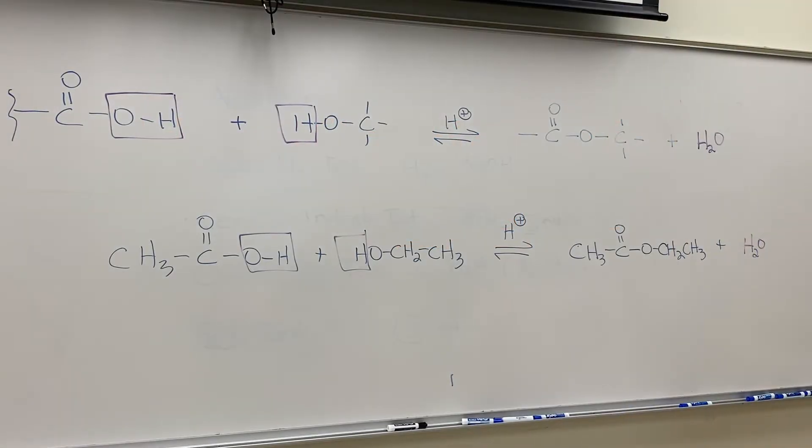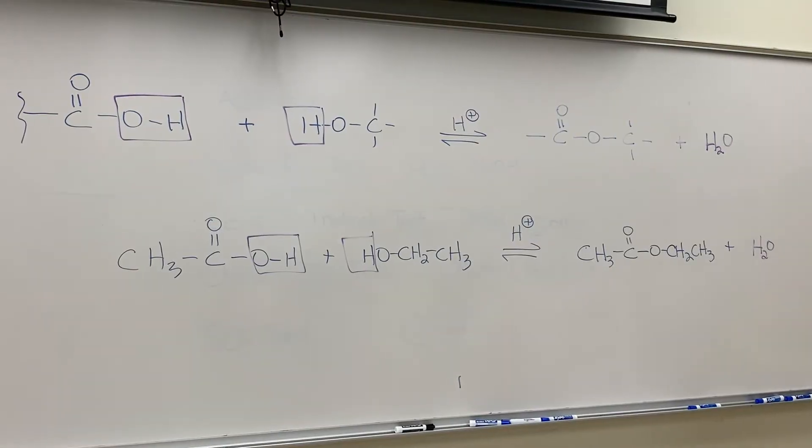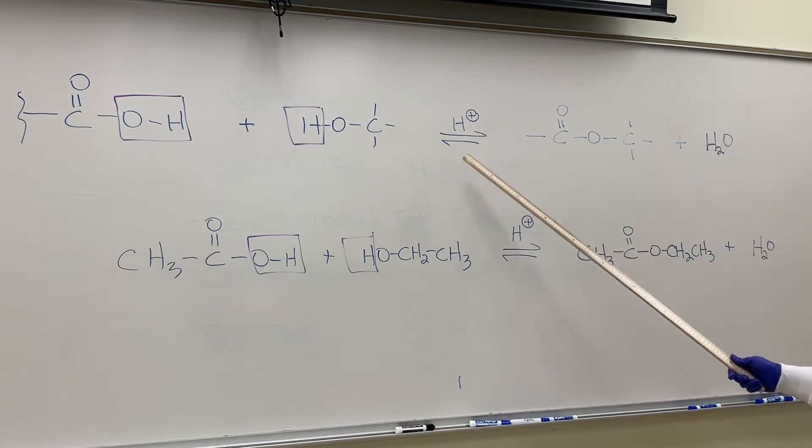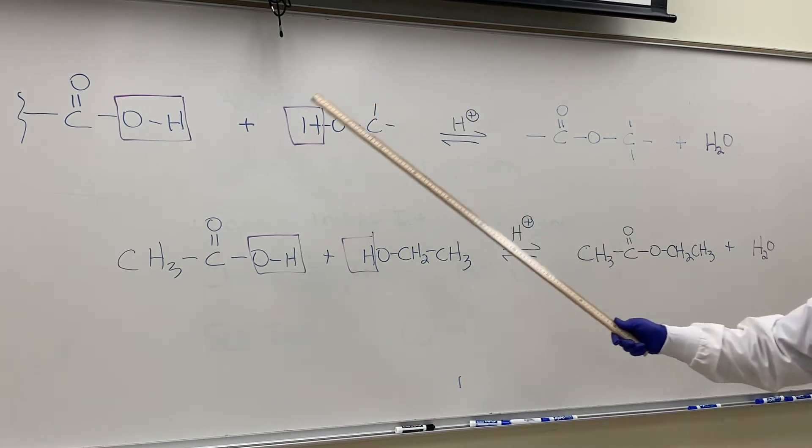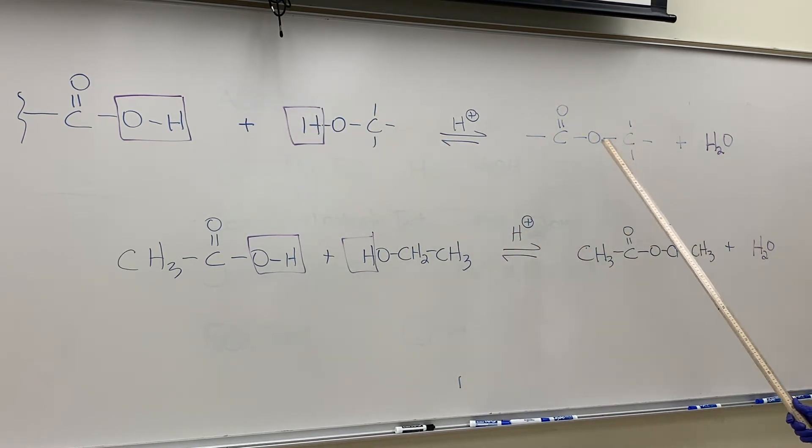Just to backtrack a little bit in terms of how to form an ester, there are several different ways that you will come across in your lecture material. This is probably the cheapest and easiest way to make an ester. However, the yields of producing an ester are not very great, and the reason for that is if you notice this double arrow here, which means it's at equilibrium, which means you'll never get complete conversion of the reactants to the product.